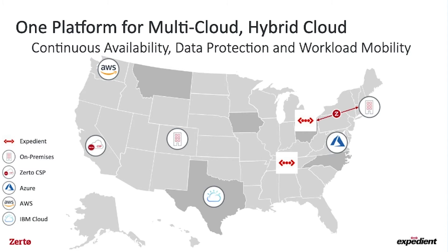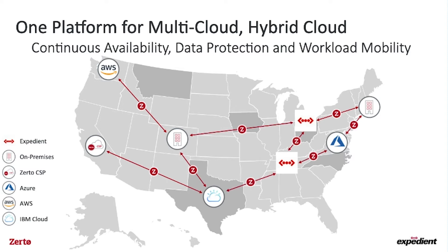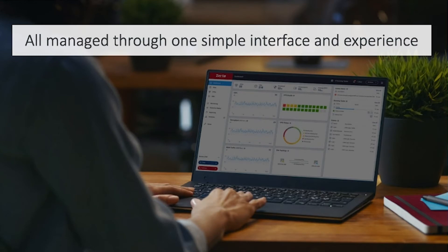Zerto supports many platforms — you could be on Expedient's cloud platform, on-premises, Azure, or AWS. Zerto is agnostic, ensuring availability and mobility. And it doesn't matter where you deploy it — it looks exactly the same. Simplicity is really one of the core mantras of Zerto, so whether you're deploying it with Expedient or anywhere else, the interface looks identical regardless.